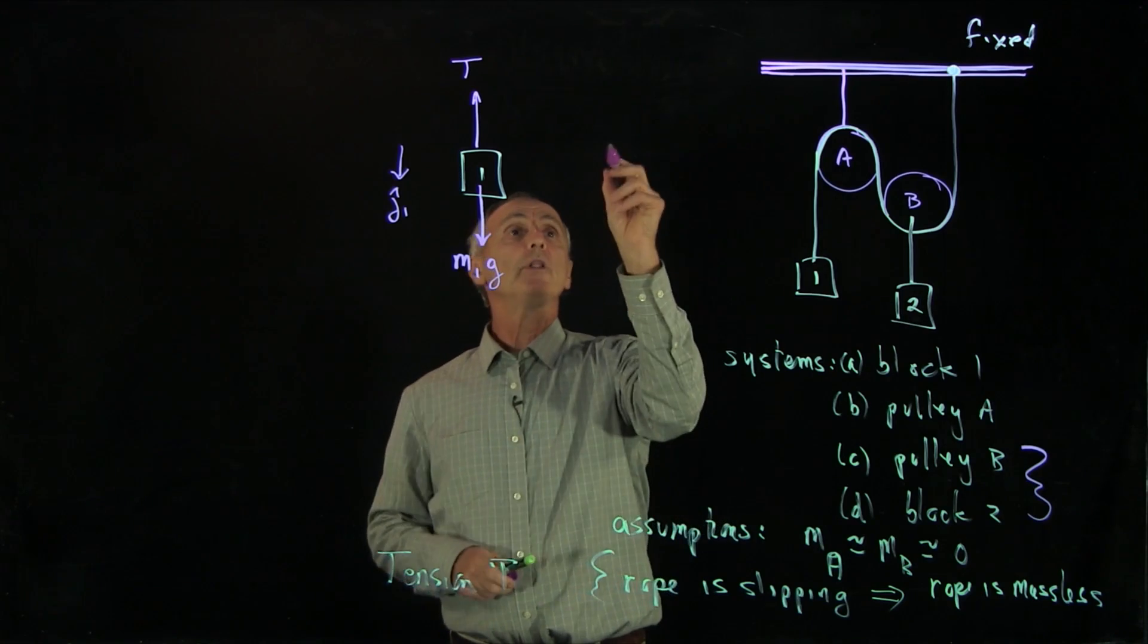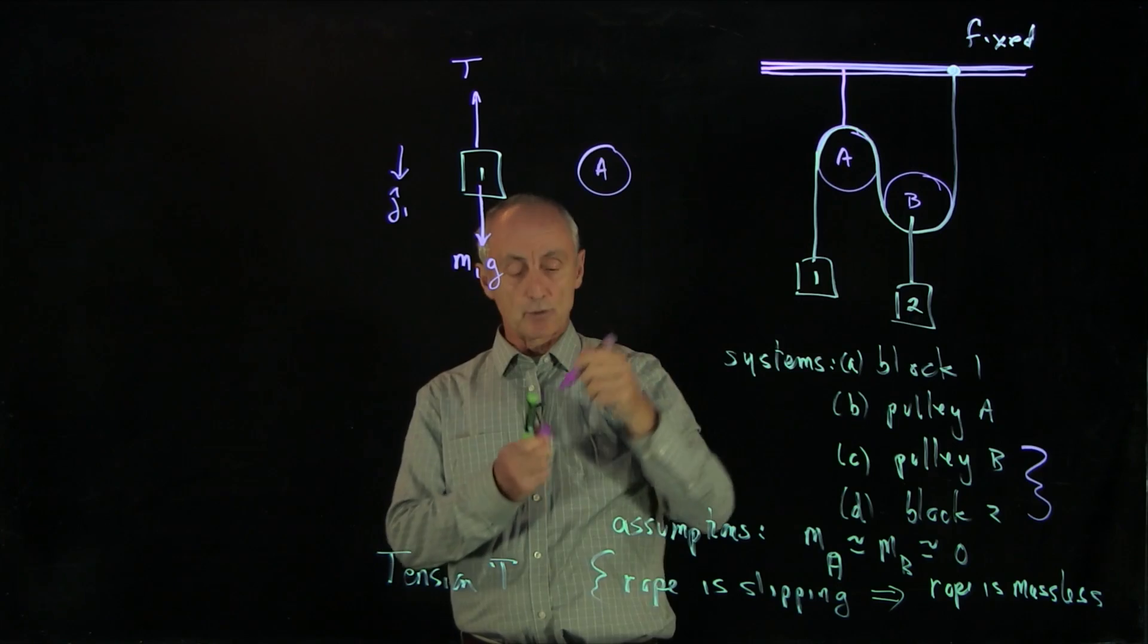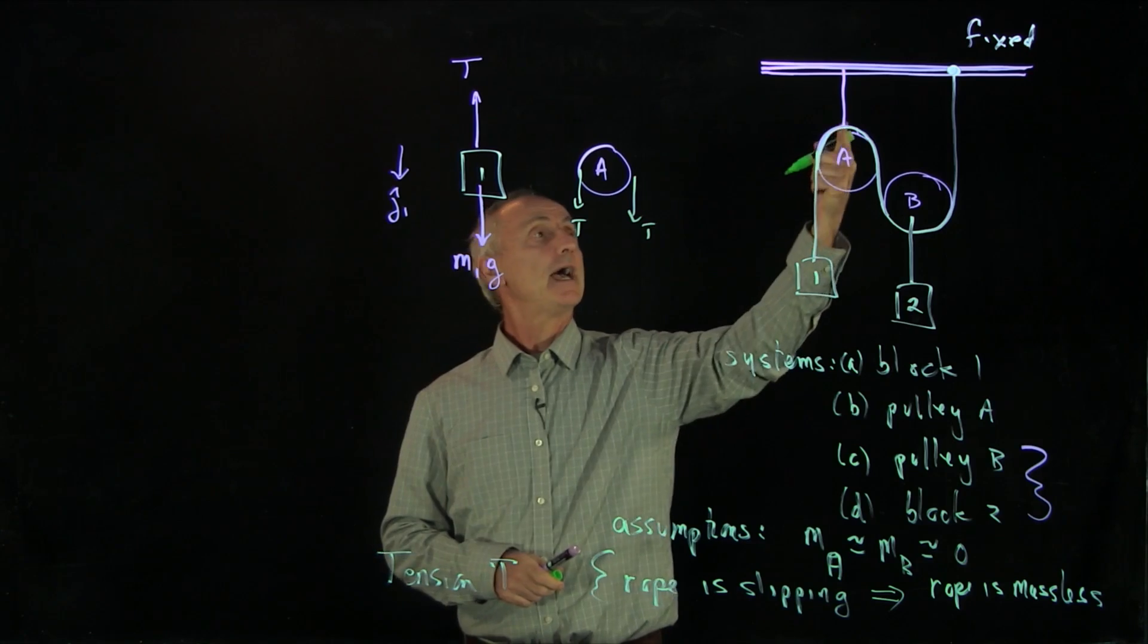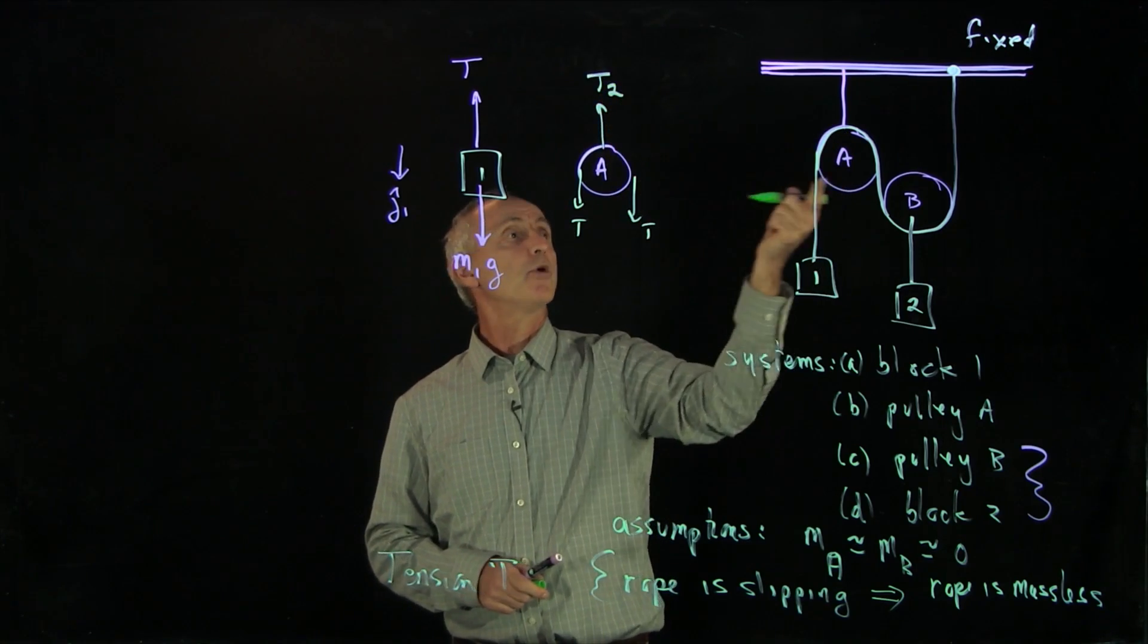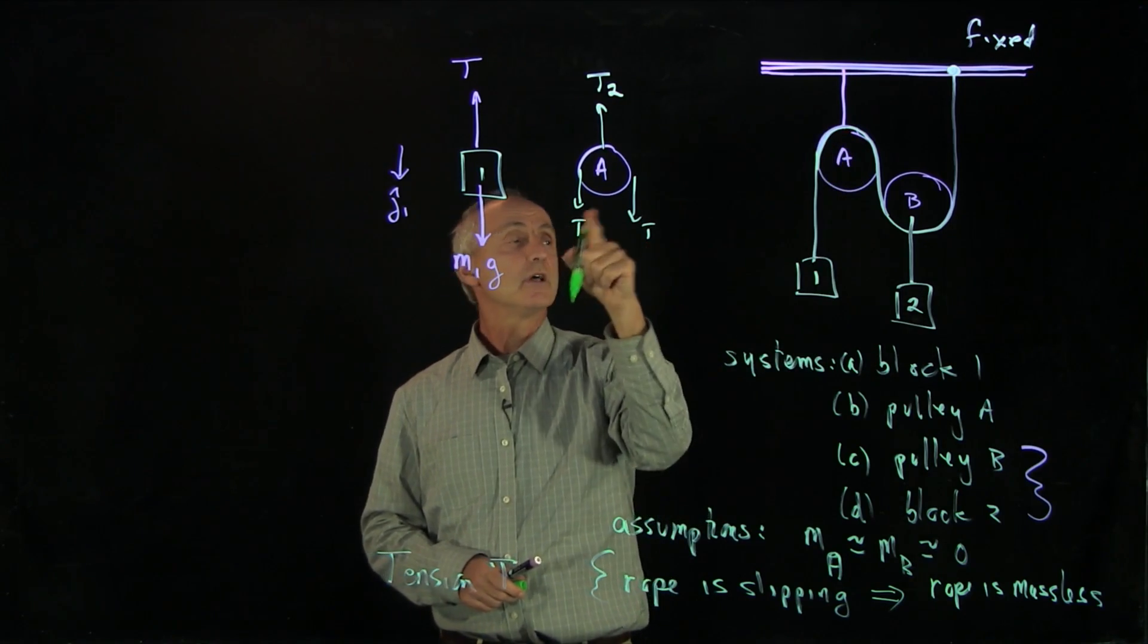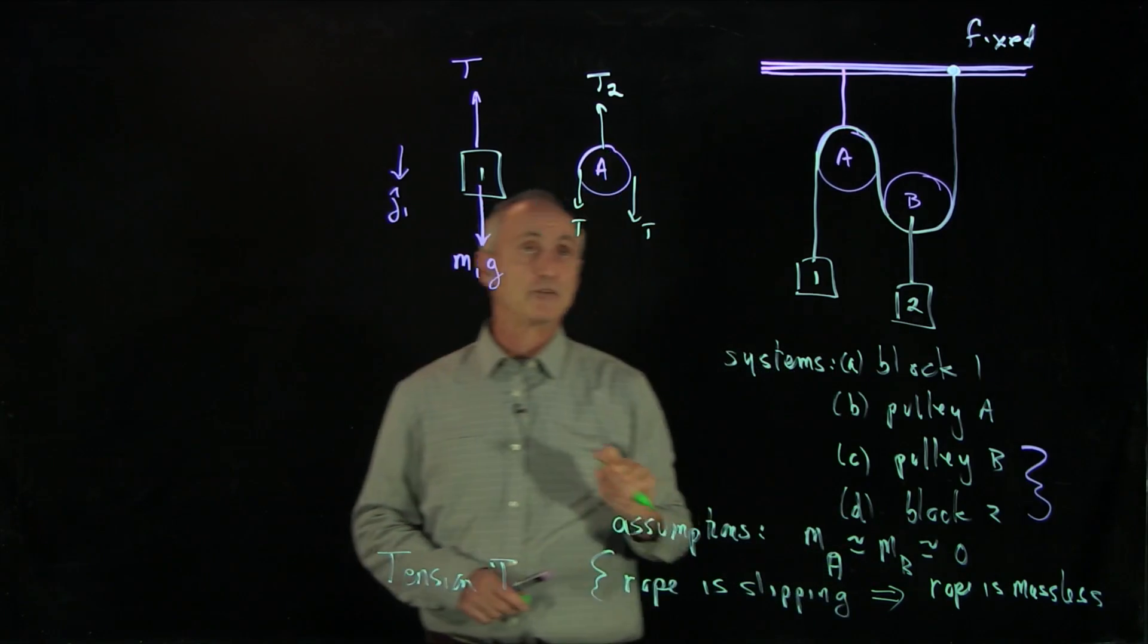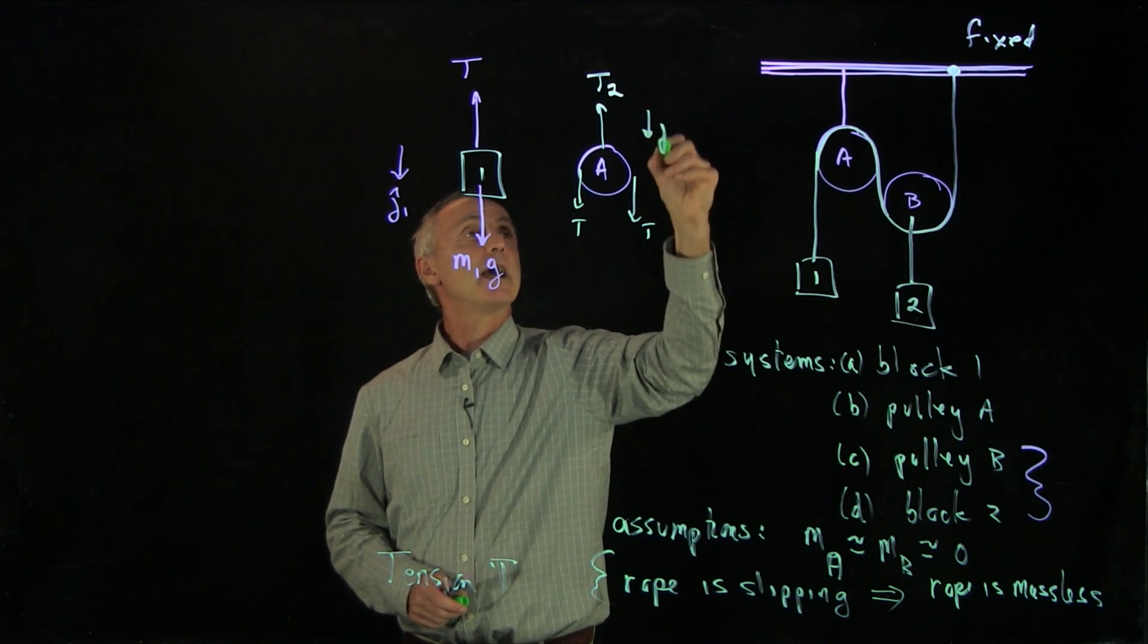Before I write down all of Newton's laws, I'll just write down our various force diagrams. For pulley A, I have two strings that are pulling it downwards. So I have tension and tension. And this string, I'm going to call that T2, is holding that pulley up. So we have the force diagram. I could write MAG, but we've assumed that the pulley is massless. And again, I'll call j hat A down.